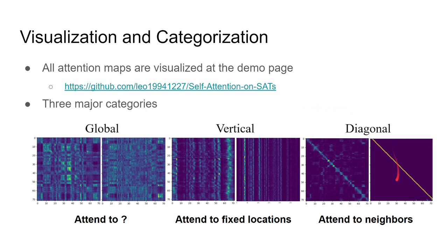So there are majorly three categories: global, vertical, and diagonal. Intuitively, diagonal attentions attend to neighbor frames on each query. Vertical attentions attend to some fixed location independent of query in an utterance, and global attentions behave randomly. All attention maps are visualized in our demo page.